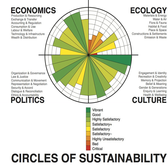The UN Global Compact was initially launched with nine principles. On 24 June 2004, during the first Global Compact Leaders Summit, Kofi Annan announced the addition of the 10th Principle Against Corruption in accordance with the United Nations Convention Against Corruption adopted in 2003.